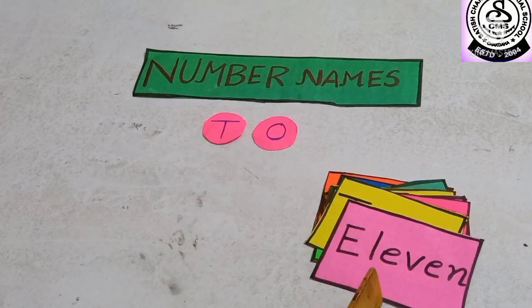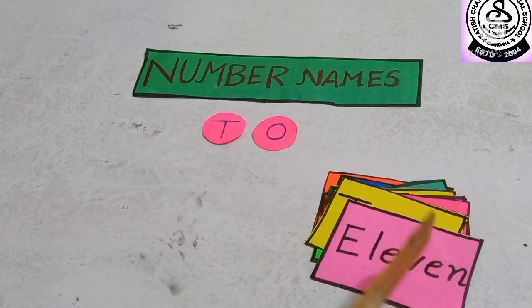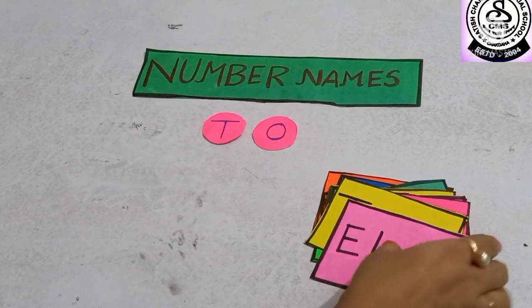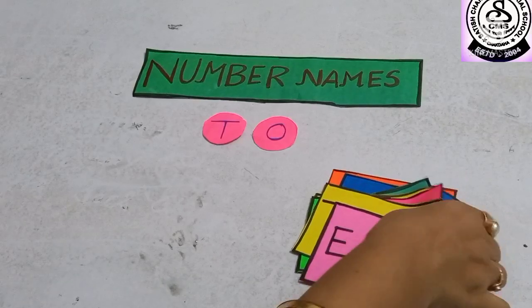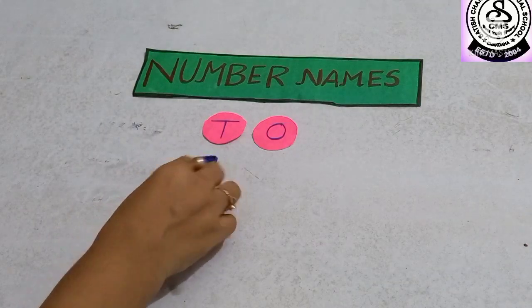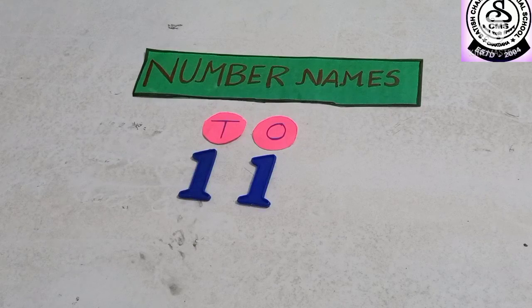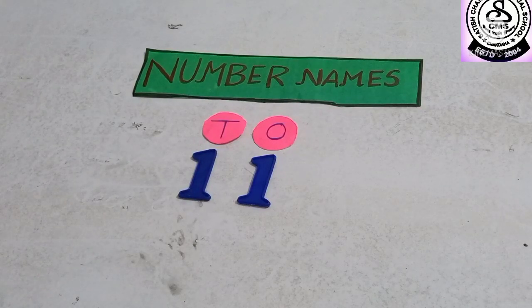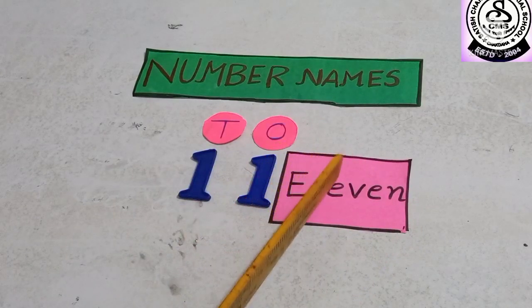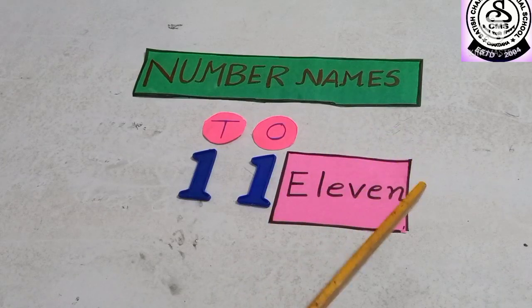Number names from 11 to 20. Here you can see I have prepared for you some colorful flashcards. Let's start. 1, 1, 11. What is the spelling of 11? E-L-E-V-E-N, eleven.